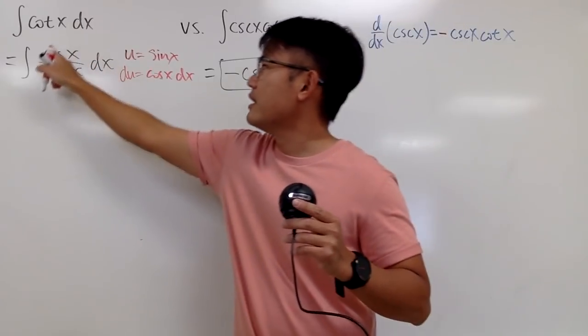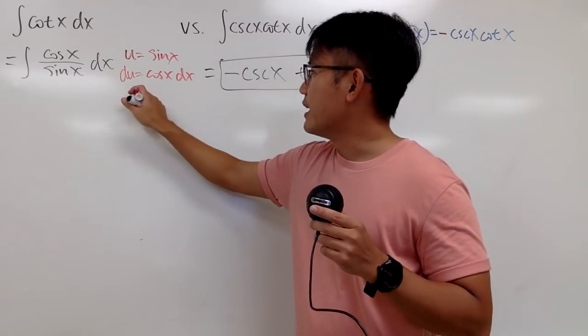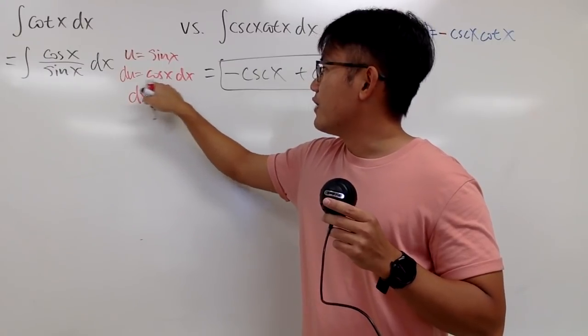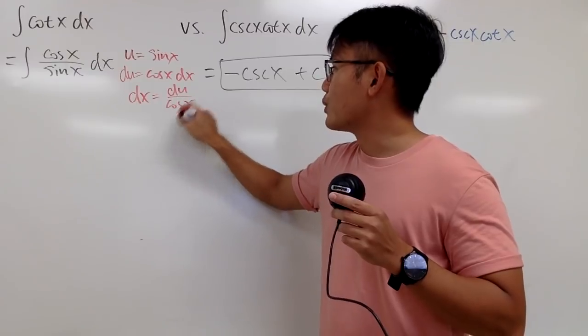And if you want to see a cancellation, you can isolate the dx and divide the cosine x on both sides. You get du over cosine x.